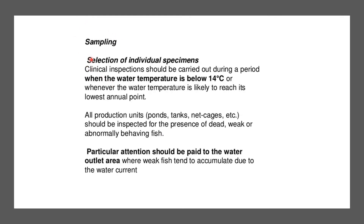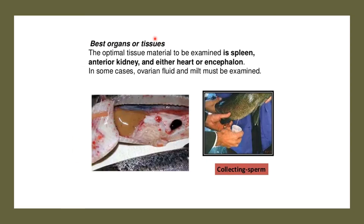Clinical inspections should be carried out when water temperature is below 14°C or when likely to reach its lowest annual point. All production units should be inspected for dead, weak, or abnormally behaving fish. Attention should be paid to the water outlet area where weak fish tend to accumulate. The optimal tissues to examine are the spleen, anterior kidney, and either the heart or the brain. In some cases, ovarian fluid and milt must also be examined.